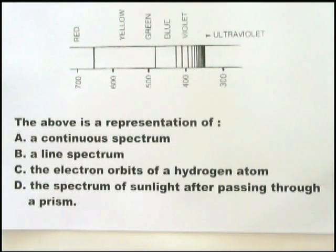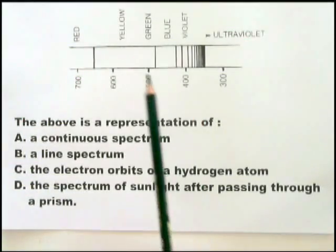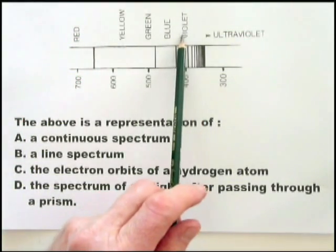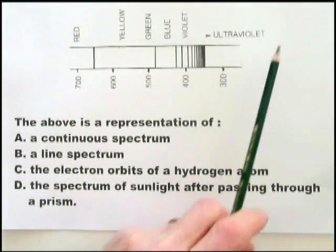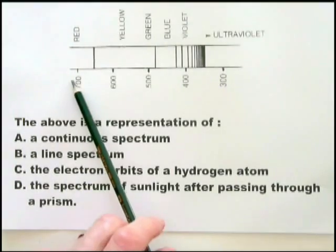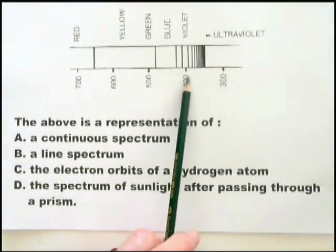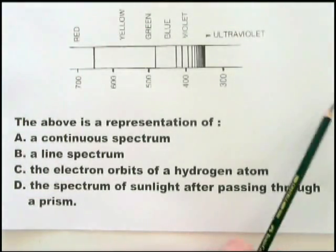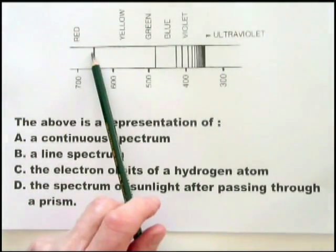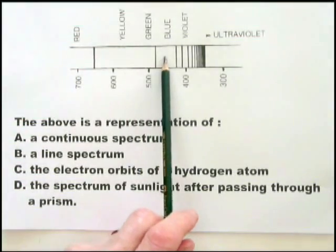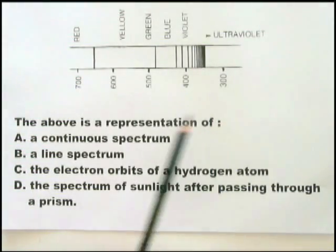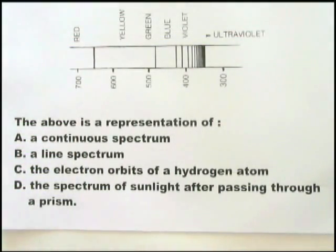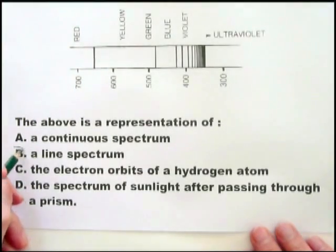One of the things you're expected to recognize is a line spectrum. This has all the characteristics of a line spectrum. In this particular one, it's in the visible region, with the ultraviolet region at that end. This is wavelength going downwards, and therefore frequency is going up. As the frequency is going up, the lines are converging — and this is a line spectrum.